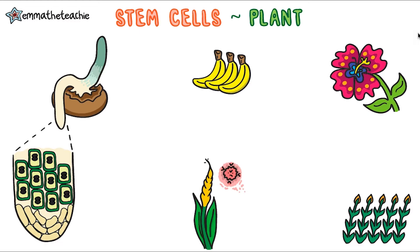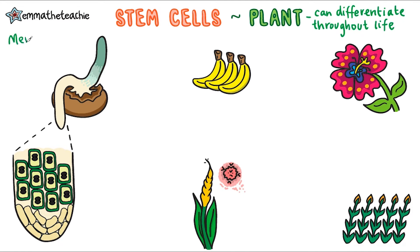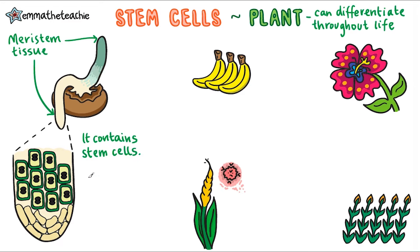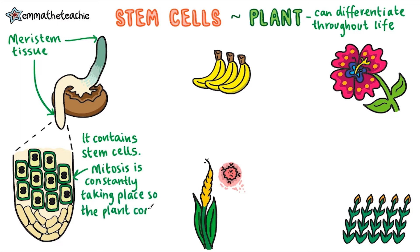Now on to plant stem cells. Plant cells can differentiate throughout their entire life as they continue to grow for their whole life. Meristem tissue is found in the shoots and root tips of plants, and this is where you'll find the stem cells. A lot of mitosis is taking place here constantly so that the plant is continuing to grow.